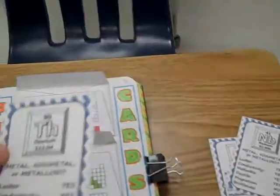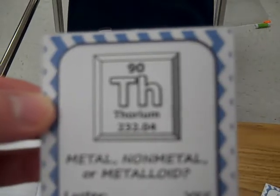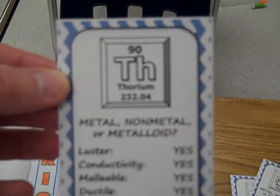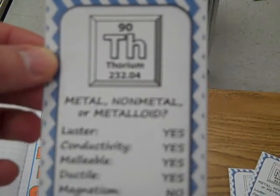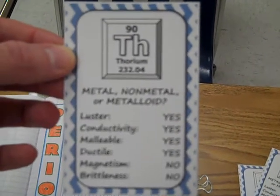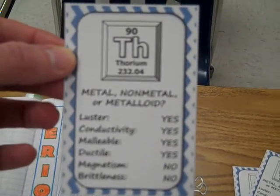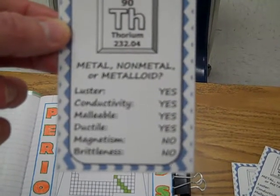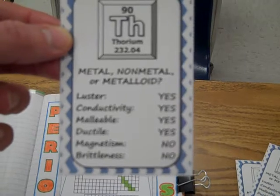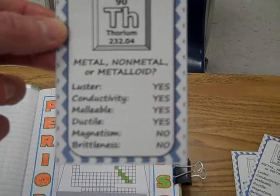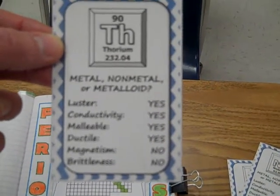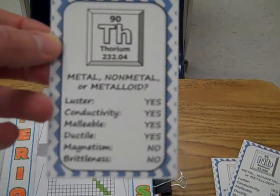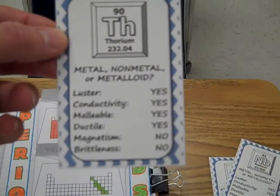Just to give you a close-up of one of the cards — here's thorium — it shows the atomic number, symbol, name, and atomic mass. Then it has the question 'metal,' and lists the properties: luster, conductivity, malleable, ductile, magnetism, or brittleness. It's either yes or no, and with conductivity, if it's a semiconductor, it says 'semi.'